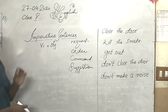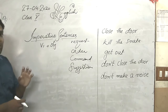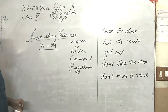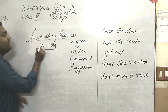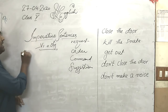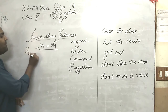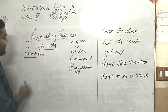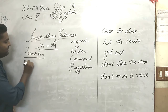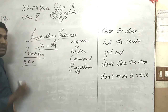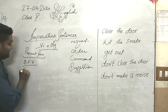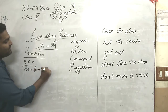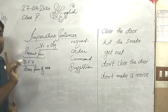In imperative sentences, we are going to discuss the basic and very important things which we must know. Let's see what is the structure of the imperative sentence. In the imperative sentence, we always use the first form of verb — or we can say the present form of verb. We always use BFV. What is BFV? BFV means base form of verb.